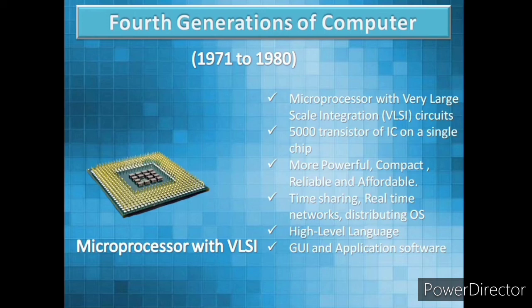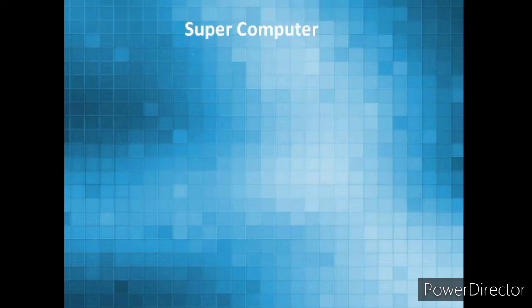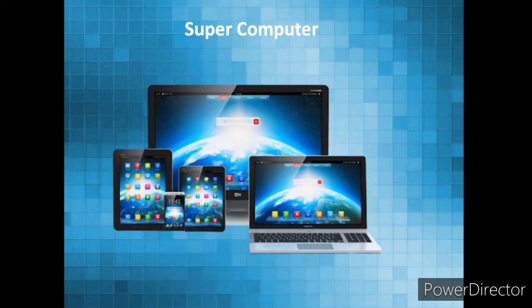In this generation, computers used time sharing, real-time networking, and distributed operating systems. They also supported high-level programming languages, and GUI — Graphical User Interface — and application software. An example of this generation of computers is the supercomputer.